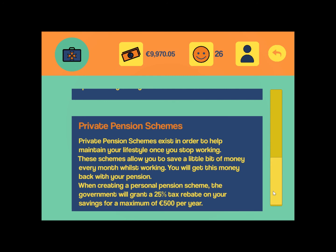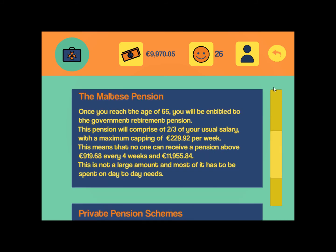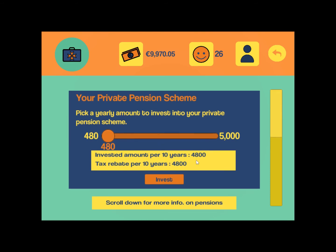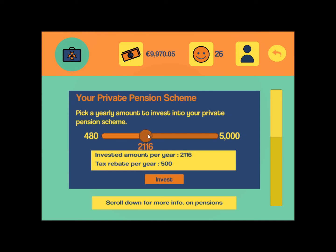This information is presented in a gamified way where you can invest an amount and get a tax rebate. If I increase the amount per year I get a higher tax rebate, up to the maximum. Obviously if I exceed the 2000 euro mark the rebate still remains 500 euros. I'll start by investing the minimum amount.